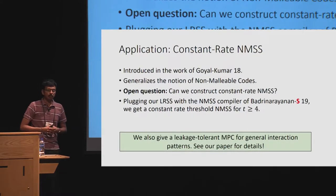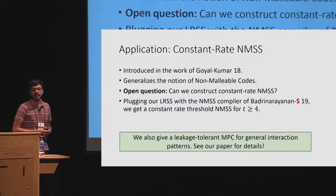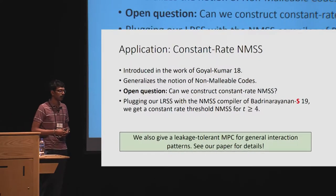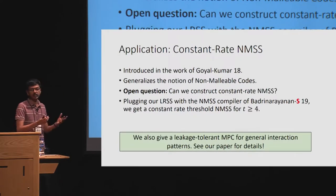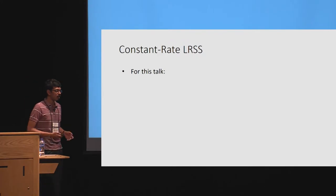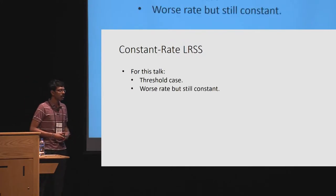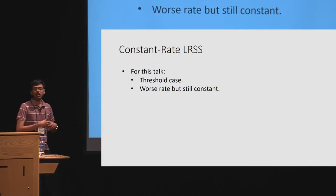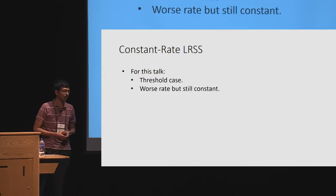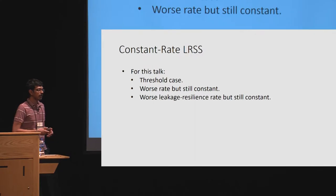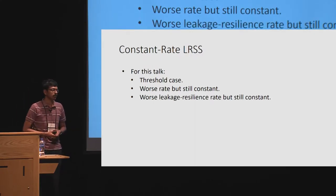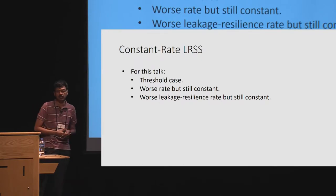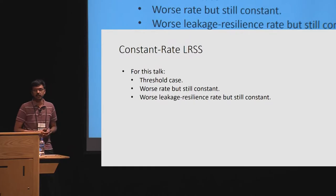We also give a leakage-tolerant multi-party computation scheme for general interaction patterns, though I won't have time to go into details — I encourage you to look at our paper. In the rest of the talk, I'll focus on the threshold case and give a construction of leakage-resilient secret sharing with constant rate. The rate will be somewhat worse than promised by the compiler, and the leakage resilience rate will also be a constant rather than optimal, but these simplifications are for the purpose of this talk.